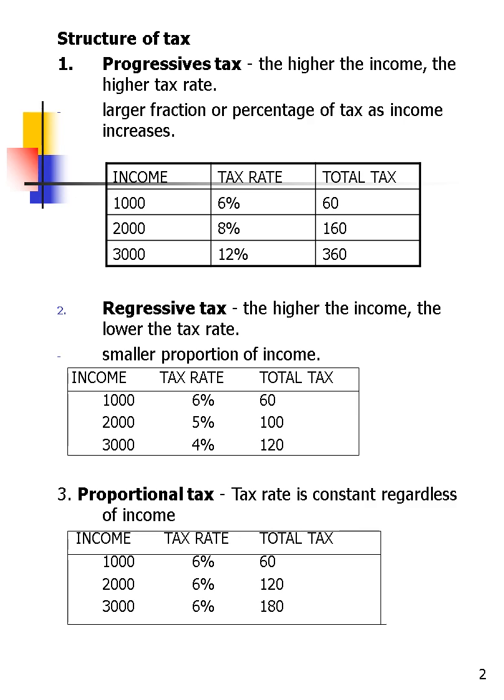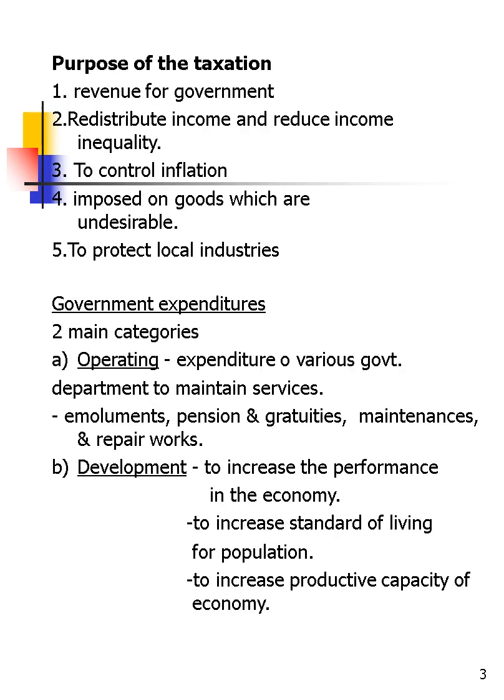Now, the purposes of taxation — why does the government put a tax? First, it is a revenue for the government. Second, to redistribute income and reduce income inequality, because in a country to achieve high income you have to make sure that the gap between incomes is not too large, so we have to redistribute income by paying tax. Third, to control inflation. Fourth, to impose on goods which are undesirable. And the last one is to protect local industries.